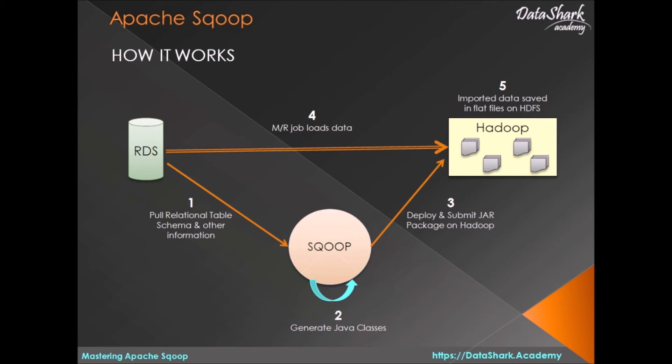In the third step, Sqoop will send that jar file to Hadoop's YARN engine, which will allocate some resources for this MapReduce job and will run it in the Hadoop cluster.